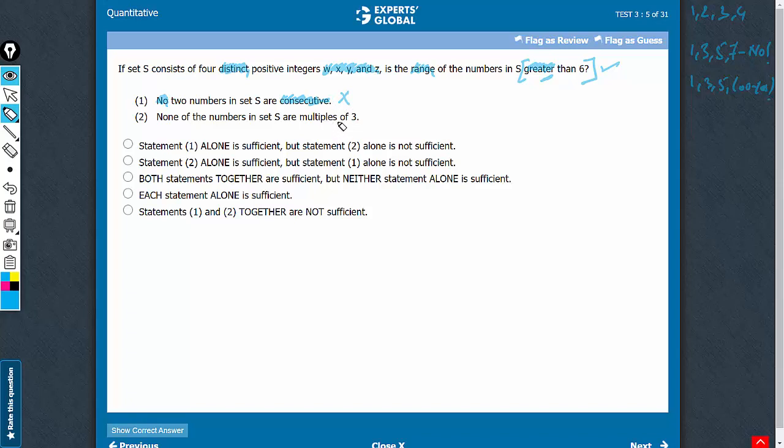Look at statement 2 now. Statement 2 says that none of the numbers are a multiple of 3. So alone, of course, it is not possible. Now we have the flexibility of taking consecutive numbers, and therefore we can take something like 1, 2, 4, 5. None of the 4 integers is a multiple of 3, and the 4 integers taken are distinct, and therefore no is possible.